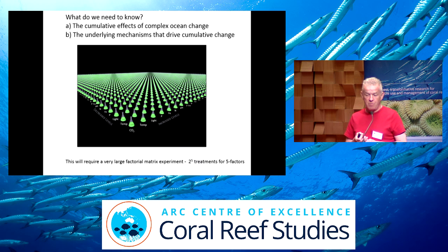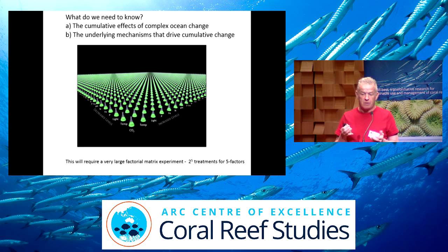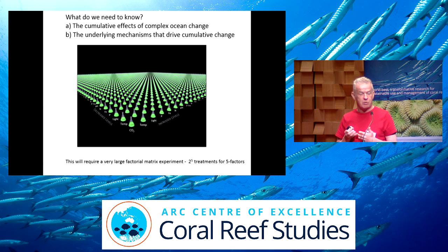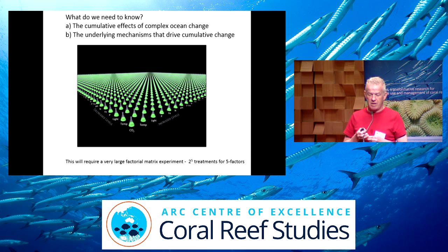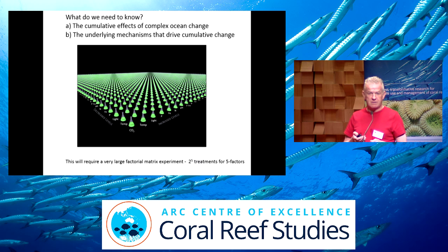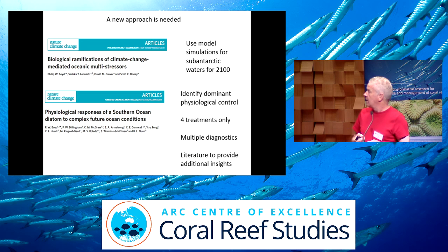To reframe the questions, there are two things we really want to know: first, what is the cumulative effect of this complex ocean change from locale to locale, and second, what are the underlying mechanisms driving the change — the individual effects of stressors, the cumulative effect, and also the interplay between the different stressors as you saw with the sea urchins. However, this turns into a very dizzyingly complex experiment if we stick to the old factorial matrix design — if I want to play around with light, CO₂, nutrients, trace elements, and temperature, I'm going to need a bigger lab.